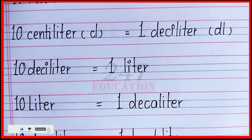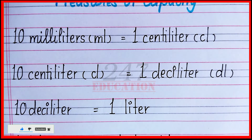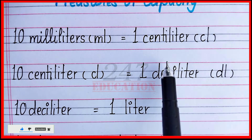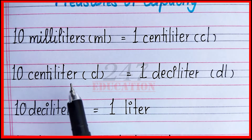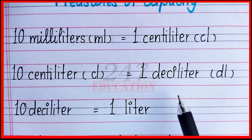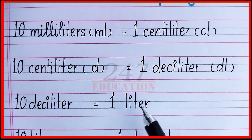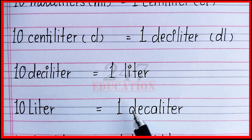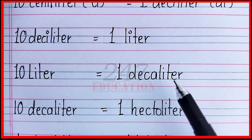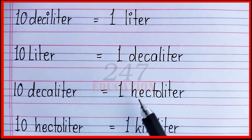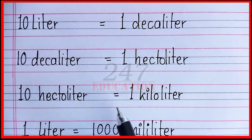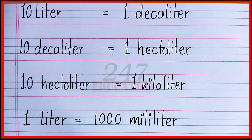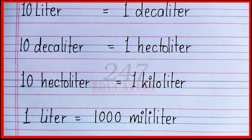To summarize: 10 milliliters equal to 1 centiliter. 10 centiliters equal to 1 deciliter. 10 deciliters equal to 1 decaliter. 10 decaliters equal to 1 hectoliter. And 10 hectoliters equal to 1 kiloliter. 1 liter equals 1000 milliliters.